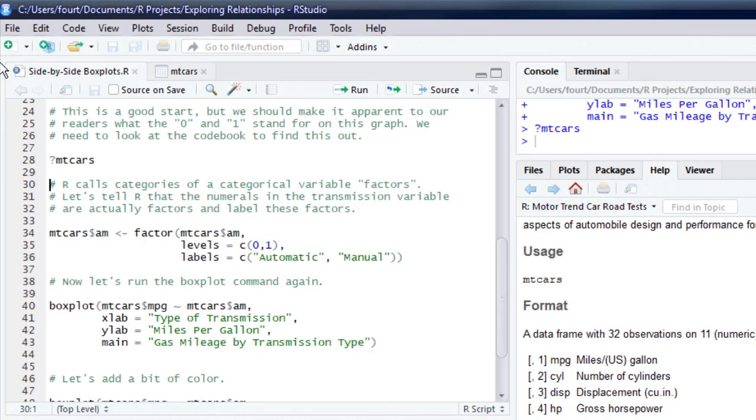Now, R calls different categories of a categorical variable factors. We tell R the names for the categories by using the factor function. The first parameter of the function is the variable of interest, am. The second parameter contains the levels or categories as they are currently coded in the data. In this case, that's zero and one.